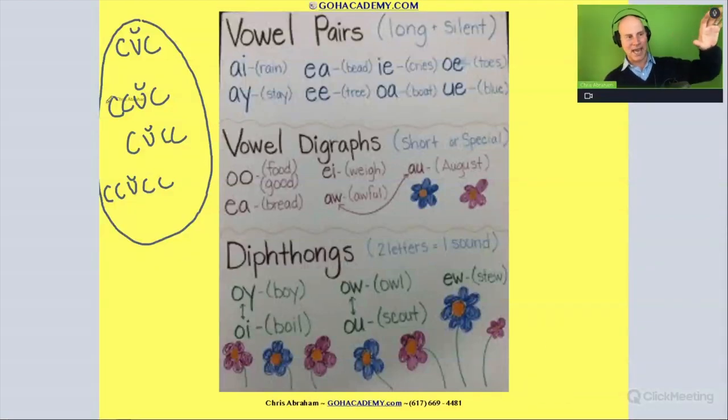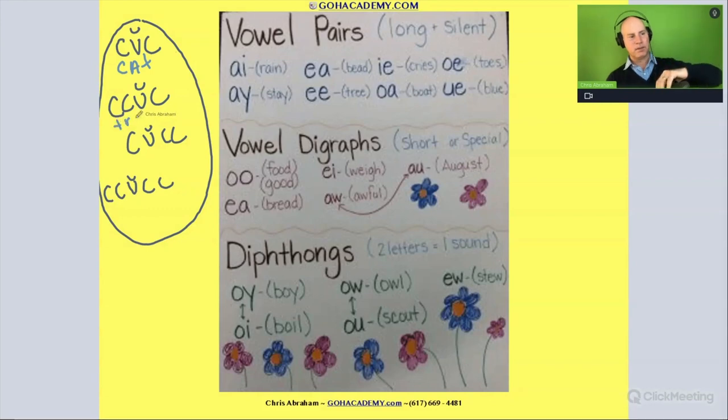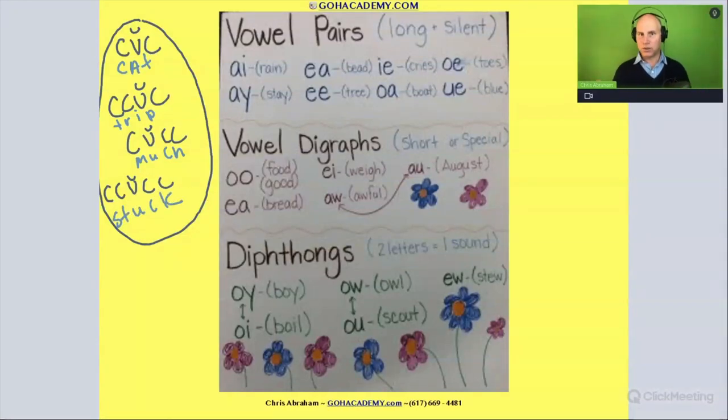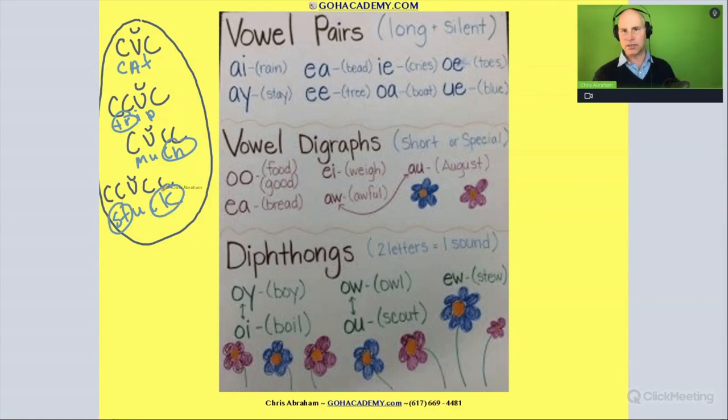Basic words like cat, trip, much, stuck. Those are all basic words that fall into those patterns, and it's made up of some blends and some consonant digraphs. We've got that.